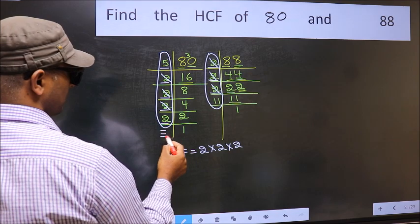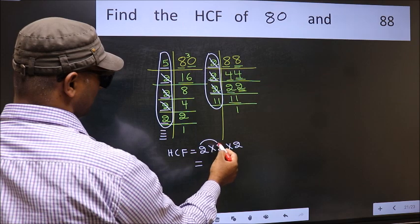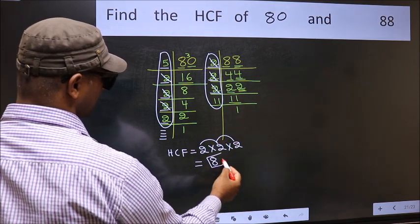No more numbers have been left out. So our HCF is 2 into 2, 4 into 2, 8 is our HCF.